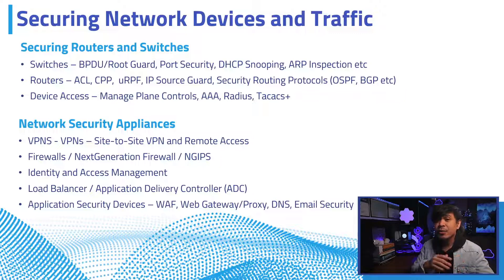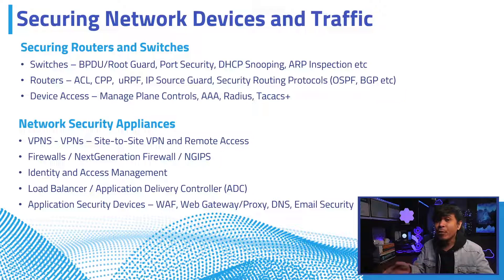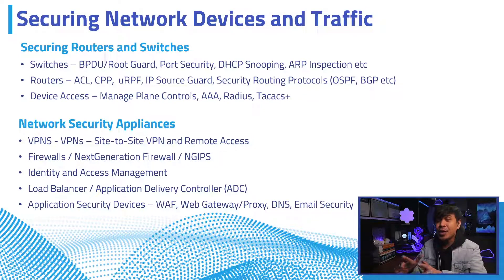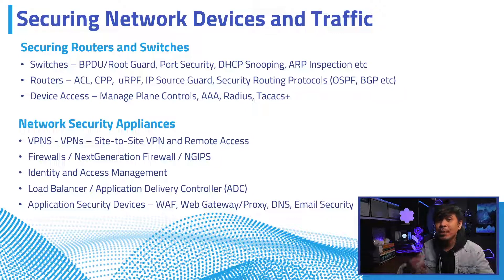Another device I personally recommend is the Application Delivery Controller or load balancer, because it's a network, server, and application appliance. The best example is F5 BIG-IP, designed for inbound traffic to protect servers and applications. This will help you shift from network engineer to network security engineer and application security specialist. Other application-level security devices include Web Application Firewalls such as Imperva, Secure Web Gateway/proxy such as Blue Coat and Cisco WSA, and DNS and email security appliances.